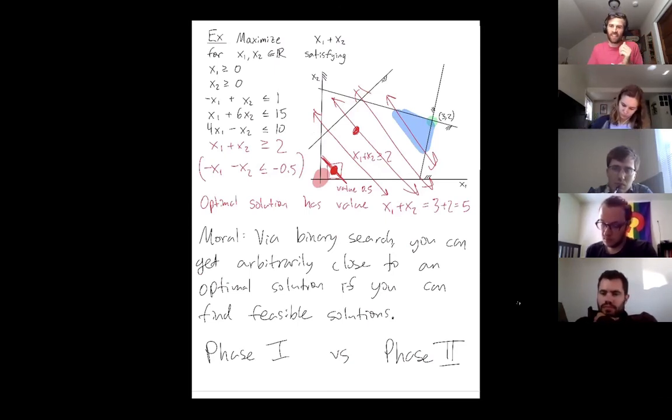After you learn phase two, then you learn phase one. And phase one is just finding any vertex of your polygon. But in some sense, you know, phase one is the harder, more general goal. You know, in some sense, if you can solve phase one, if you can find any solution, then you can find an optimal solution.